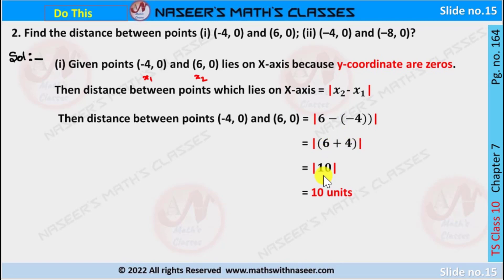6 plus 4 becomes 10, then we get |10|. It is already positive. So we can write the distance between the points whose y-coordinate is 0 is 10 units.